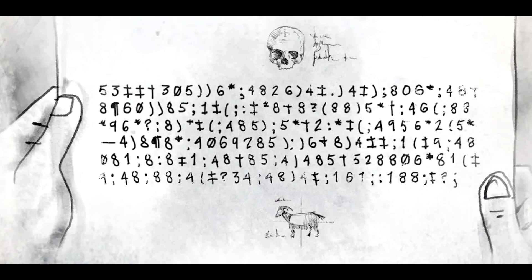Now let's look through the message for combinations of symbols we know. On the second line of the message, this arrangement appears: double cross 83, open parentheses 88. Substituting the letters we know, we get cross E-G-R-E-E. This looks very much like the word degree and gives us another letter, D, represented by the symbol cross. Still on the second line, four symbols beyond the word degree, we see the combination semicolon 46, open parentheses, semicolon 88, asterisk. Substituting the letters we know, this immediately suggests the word thirteen. That gives us two new letters, I and N, represented by six and asterisk.